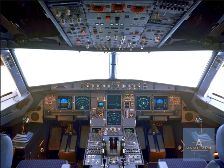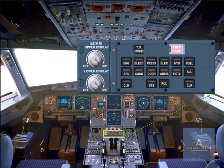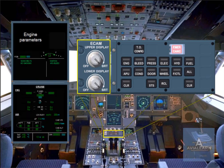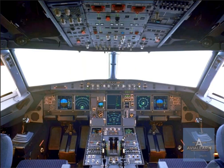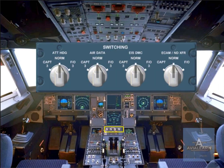The ECAM control panel is on the center pedestal, below the ECAM displays. On the left-hand side, two controls turn on/off and adjust the brightness of the two ECAM screens. Just below the ECAM screens, on the pedestal, is a switching panel for use in abnormal situations, to restore data to the EFIS and ECAM displays.